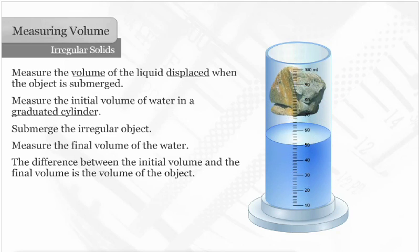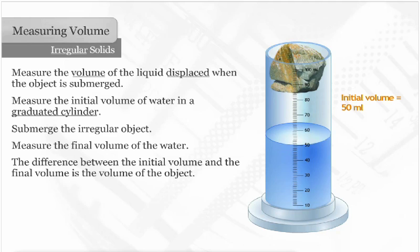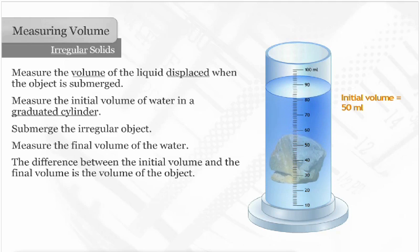In this example, the initial volume is 50 milliliters. Dropping the rock in the graduated cylinder causes the water level to rise. The final volume is 81 and 2 tenths milliliters.